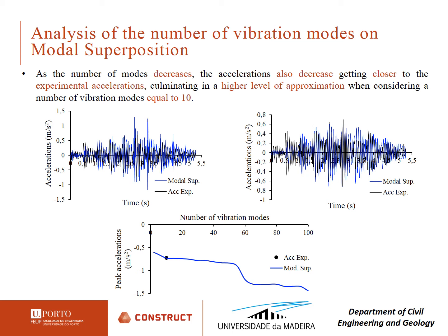For a clearer interpretation, the following graph illustrates the variation of peak accelerations with the number of modes in comparison with the experimental peak acceleration at 2.0 Hz. When comparing numerical and experimental accelerations, consideration of 10 vibration modes seems most feasible. However, this finding should be tested on a higher number of real staircases in order to verify if this value consistently gives rise to precise response estimations.